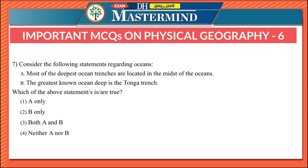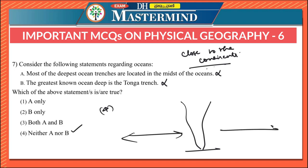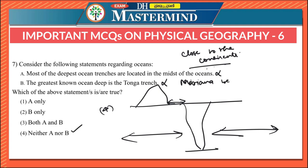The seventh question considers statements about oceans. Most of the deepest ocean trenches are located in the midst of the oceans — this is false; they are actually found close to the continents. The greatest known ocean deep is the Tonga Trench — this is also false; the greatest known ocean deep is the Mariana Trench, located in the Pacific Ocean. Therefore the right option is neither A nor B.